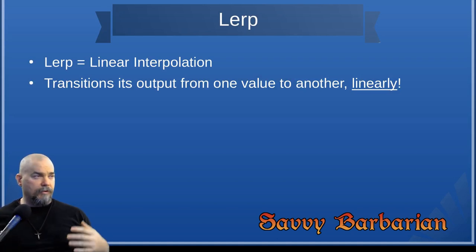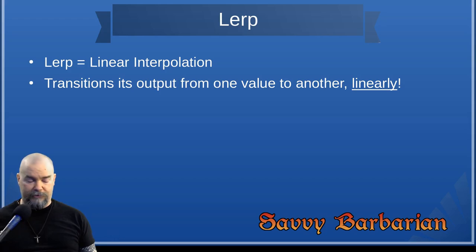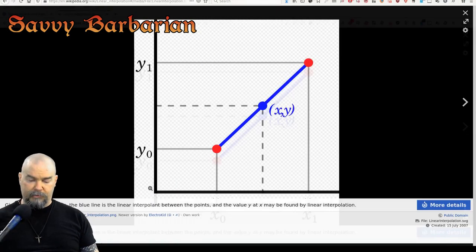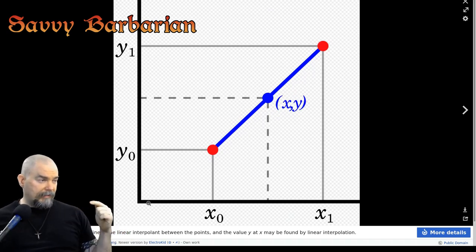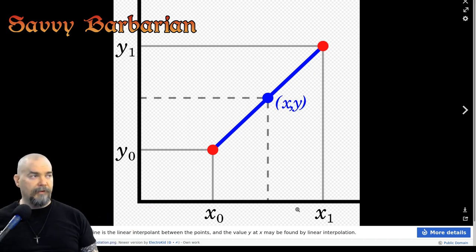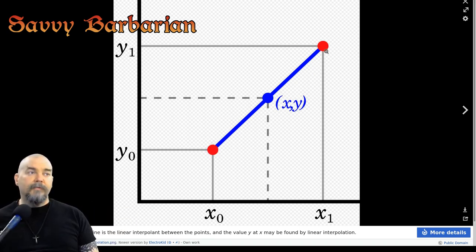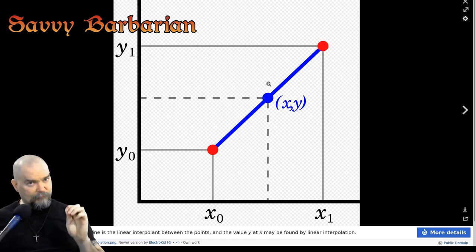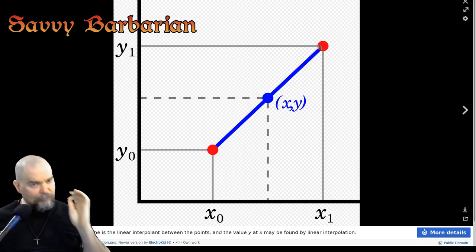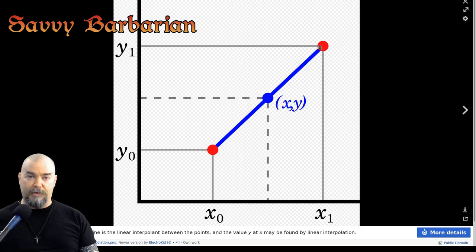I'm combining Lerp and tween because these two things share a lot of the same concepts - basically we're moving from one value to another value. Lerp stands for linear interpolation. It's going to translate from one value to another value in a straight line. Here's an example from Wikipedia: the X axis is our time axis, and the Y axis is the change of value over time. You can see this is just going to give us a straight line from our start point to our end point - straight from point A to point B.